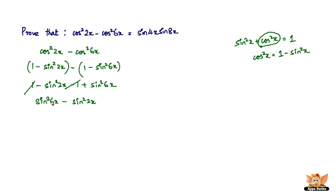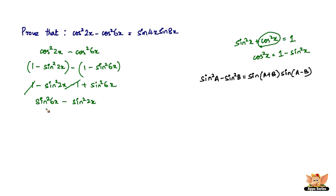This links back to the formula we just used. Sin²a minus sin²b equals sine(a+b) times sine(a-b). So sin²6x minus sin²2x equals sine(6x+2x) times sine(6x-2x), which is sine(8x) times sine(4x). That's exactly the right-hand side: sine 4x times sine 8x.